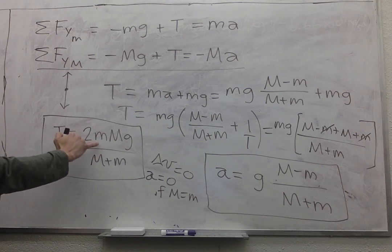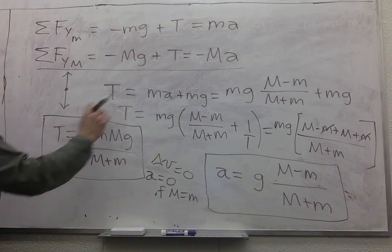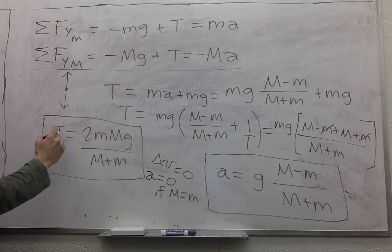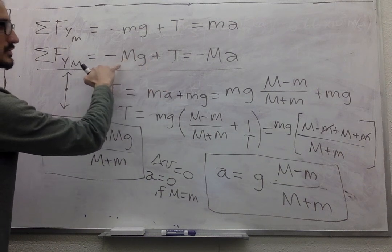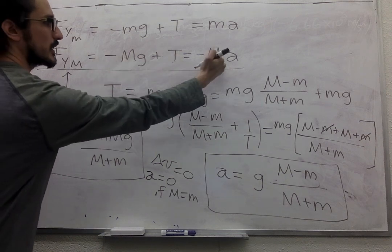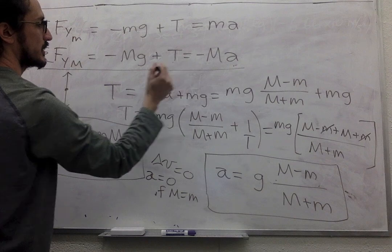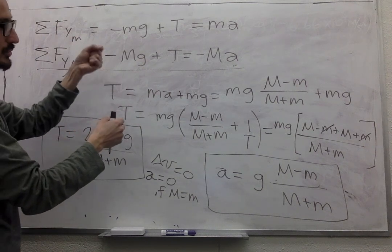If one of the masses goes to zero, then the tension goes to zero, and so the acceleration of the system is just g, the acceleration due to gravity.